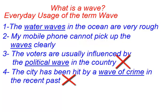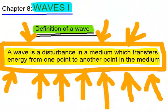The first two sentences have used the term correctly as far as science is concerned. So before you can use the term wave correctly, we must define it so that its meaning will be clear. Let us look at the definition of the term wave. A wave is a disturbance in a medium which transfers energy from one point to another in that particular medium. This is the definition that we are going to adapt for a wave.